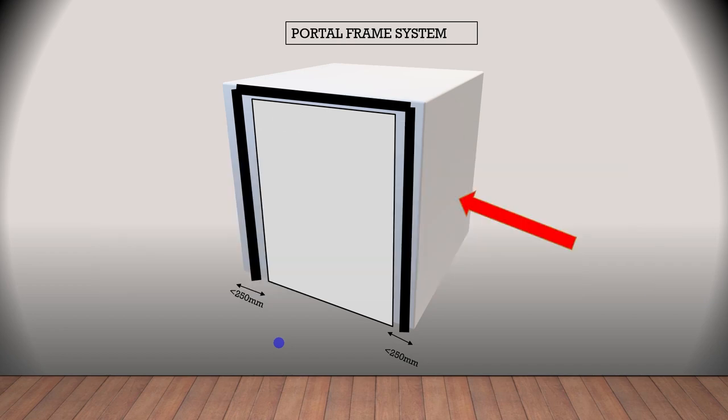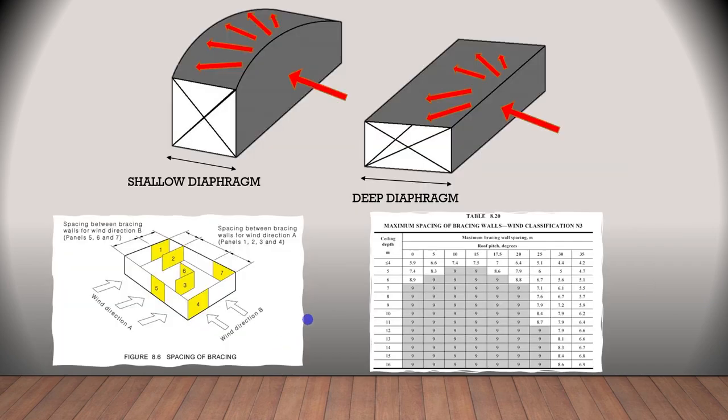Another important point I would like to touch upon is the spacing of bracing walls. AS1684 presents a table with the maximum distance between bracing walls according to wind classification, ceiling depth and roof pitch. The shallower the ceiling diaphragm, the closer the bracing walls need to be.